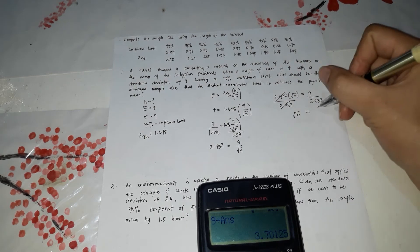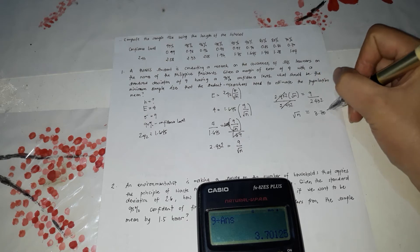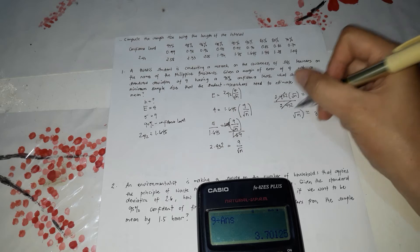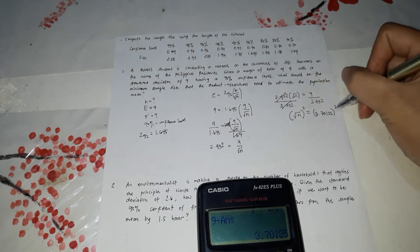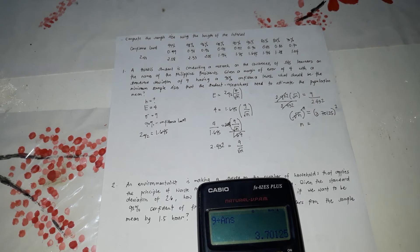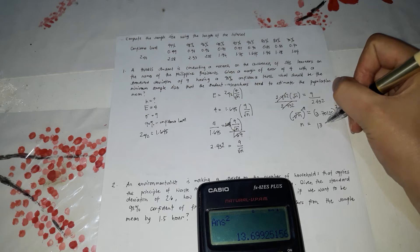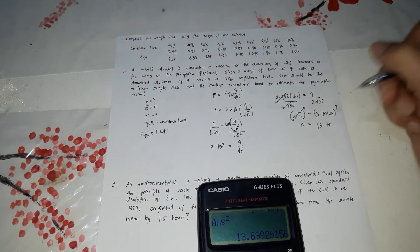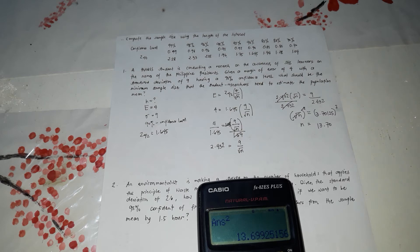Is equal to 3.70125 squared so that we could cancel the square root. N is equal to 13.70. Let's check if our answer is correct.